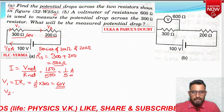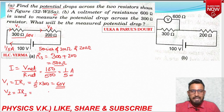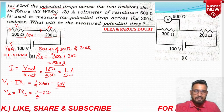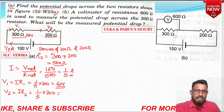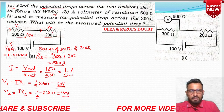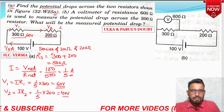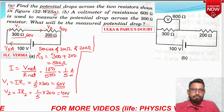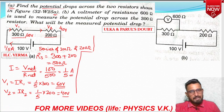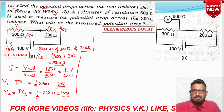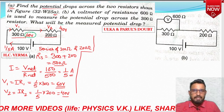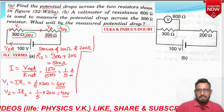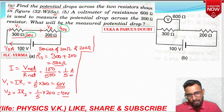V1 equals I into R1, that is 300. Current is 1/5, resistance is 300, so it would be 60 volt. So the potential across 300 ohm is 60 volt. Similarly, potential across the second one would be IR2. Current is the same because it is series connection. Resistance is 200, which gives us 40 volt. So across 200 ohm, potential is 40 volt. For 300 we have 60 volt and for 200 we have 40 volt. If we sum them: 60 plus 40 equals our total voltage of 100 volt.